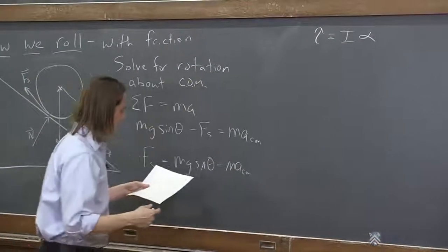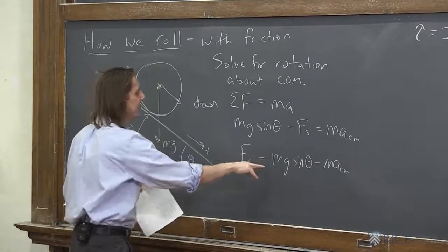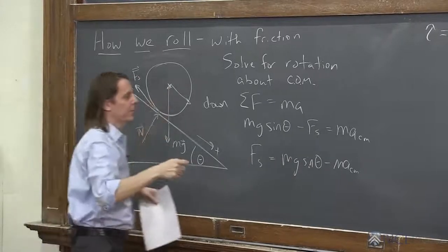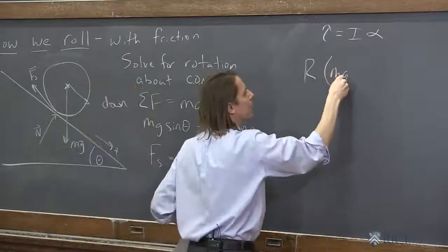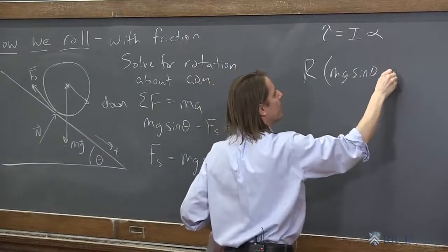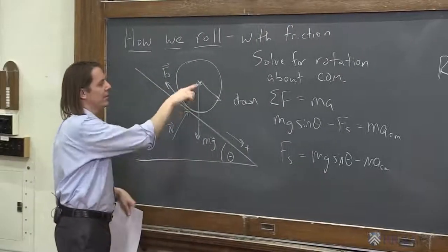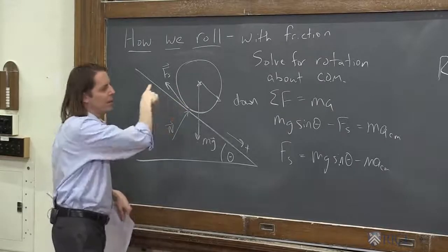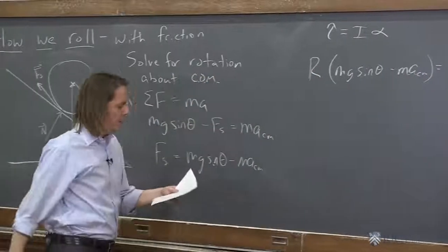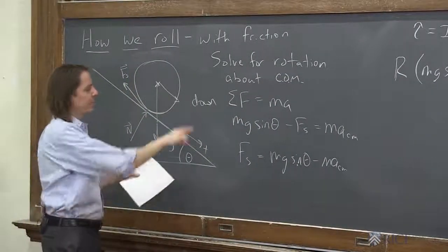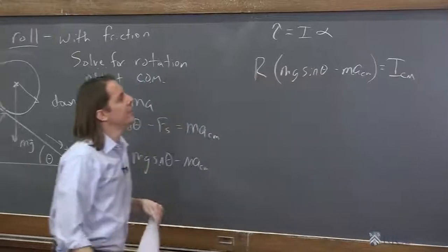So we would say then it is, fs is this, so it's r times fs, which is mg sine theta, the friction force minus ma_cm times the sine of the angle between them. Well, that's one, or the angle is 90 degrees. The sine of 90 degrees is one. So it's at right angles. So there's your torque equals I. So now we're rotating this thing around its center of mass, right? So we'll just say I_cm for now, times alpha.